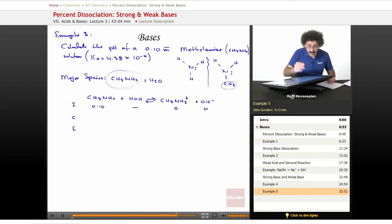As the system comes to equilibrium, this species disappears, this species appears, and this species appears. At equilibrium, we're left with 0.100 minus X. This doesn't matter, that doesn't matter. This is plus X, this is plus X.